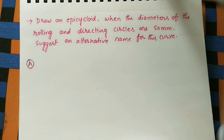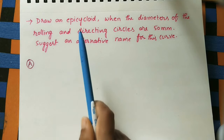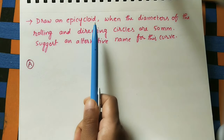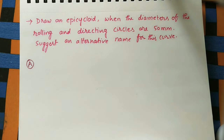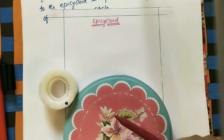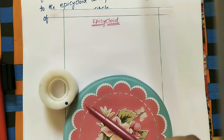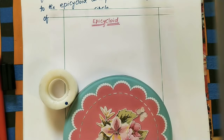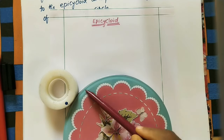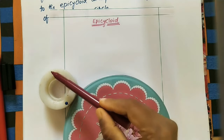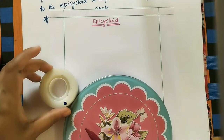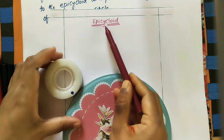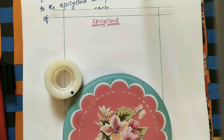Welcome to my channel. In today's class we will discuss how to draw an epicycloid for given circles. First, let us understand what an epicycloid is. An epicycloid is the path traced by one point on a circle when the circle is rotating on a curved surface. If we take one example, this is the curved surface and on it one circle is rotating — this is the path of one point on the circle.